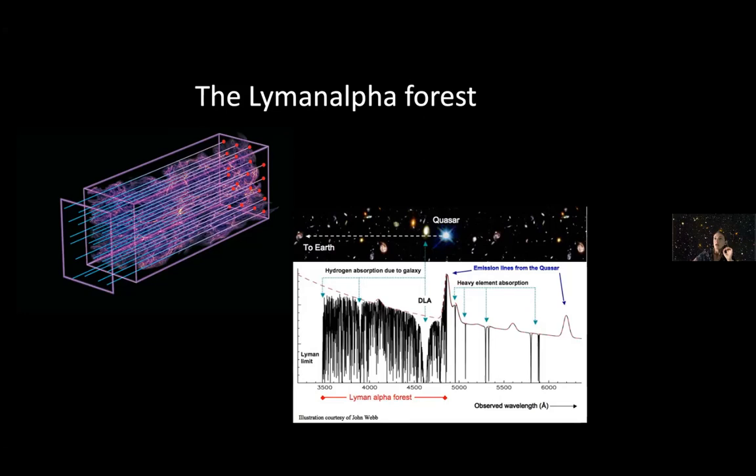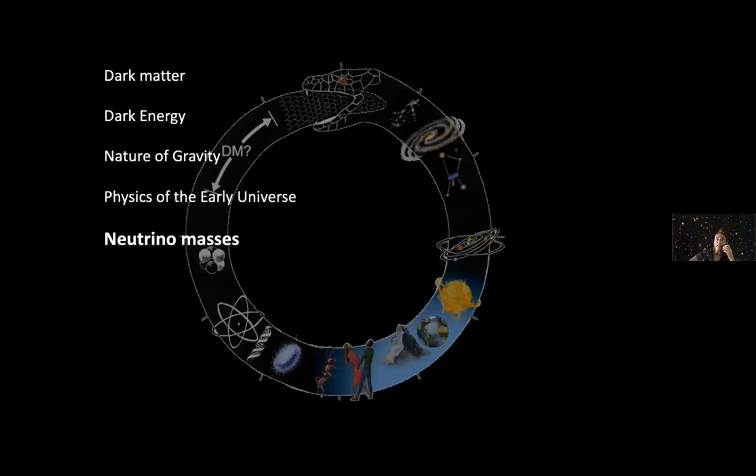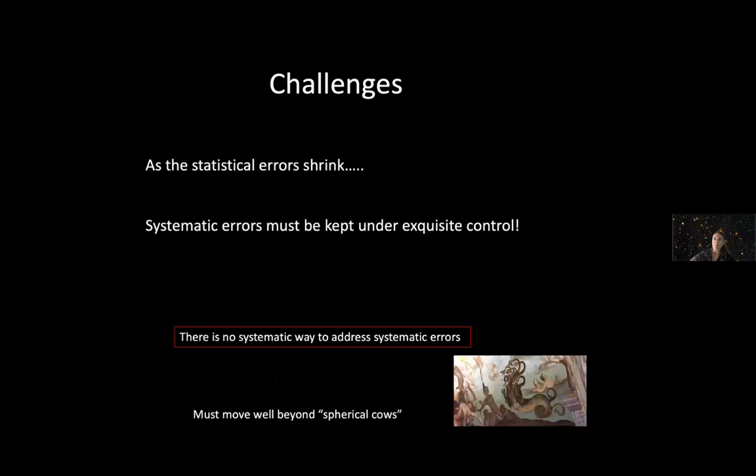We have this concordant cosmology and with all this data set, we can now do precision tests of fundamental physics with cosmological data: nature of dark matter, dark energy, nature of gravity, physics of the early universe, neutrino masses and so on. I'm going to take the example of neutrino masses because I think it's a very nice example of how cosmology connects with fundamental physics.